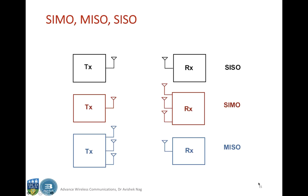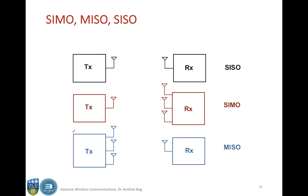For MIMO, there are different variations. The most trivial case is single input single output (SISO). Then you can have single input multiple output (SIMO), or multiple input single output (MISO). These are all subsets of MIMO.